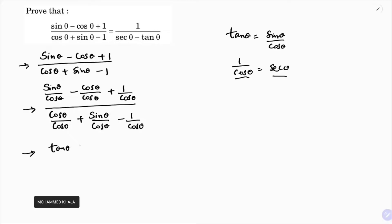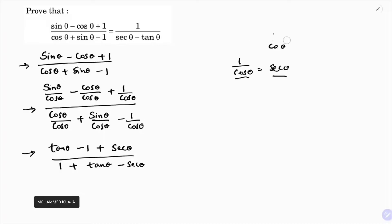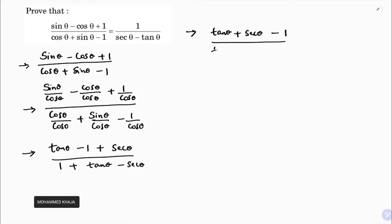So the numerator becomes tan θ minus 1 plus sec θ, and the denominator becomes 1 plus tan θ minus sec θ. I'll rearrange this: the next step is (tan θ + sec θ - 1) / (tan θ - sec θ + 1).